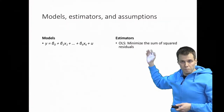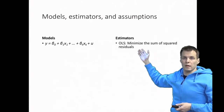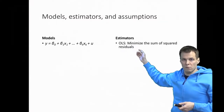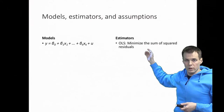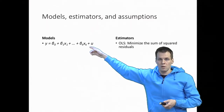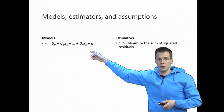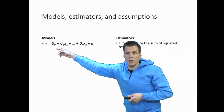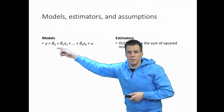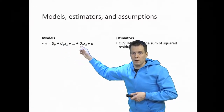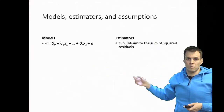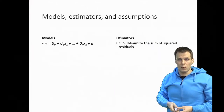One good rule is the OLS rule: minimize the sum of squared residuals. We choose the betas so that the sum of squared residuals — the difference between the observed value y and the fitted value from the betas — is as small as possible. That's the OLS estimation principle.